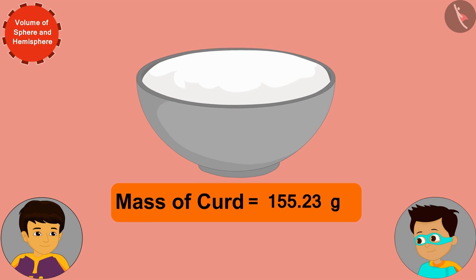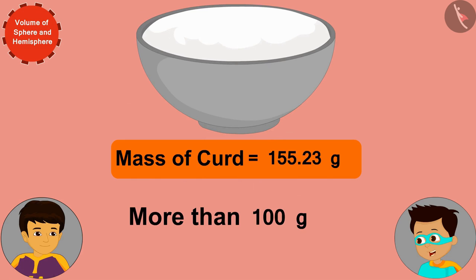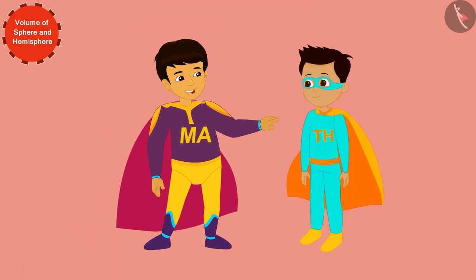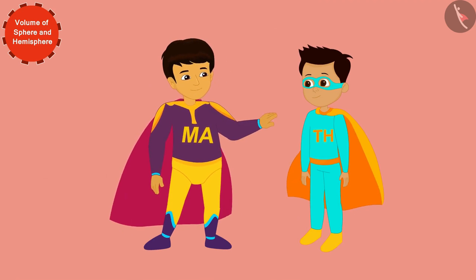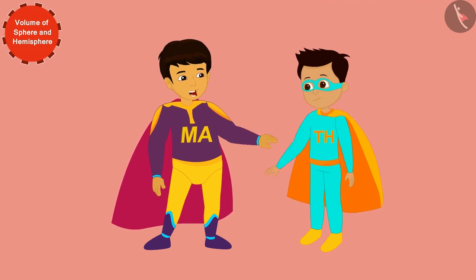The bowl has 155.23 grams — about 155 grams — of curd. This is more than 100 grams, which means you can follow your mother's instructions by eating a bowl of yogurt every day. Now let's go back to our world — eat a bowl of yogurt with me daily so that both of us stay healthy forever!